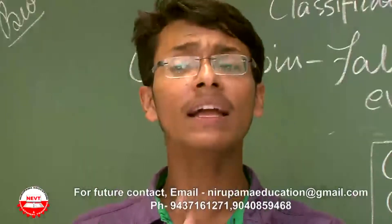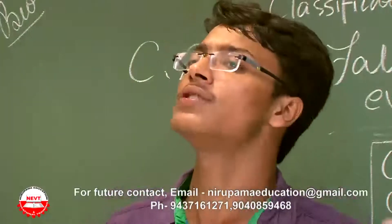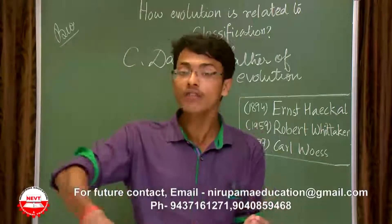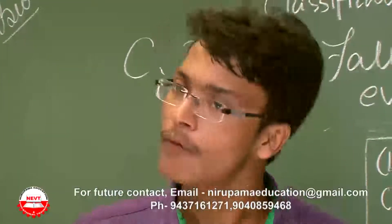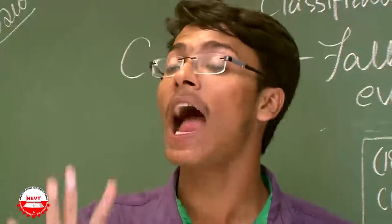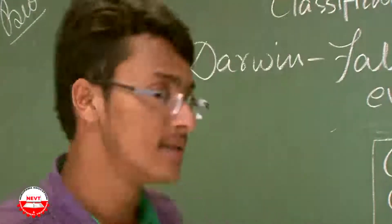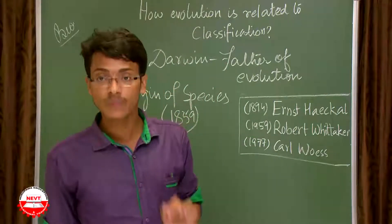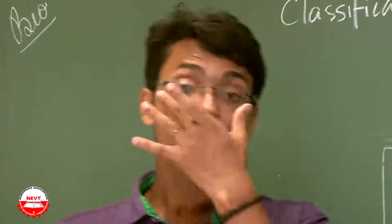Feeding is one of the most important characteristics that defines the type of morphological features an organism will exhibit. How evolutionary structures are related to classification is the most important part to understand. Darwin wrote a book called 'Origin of Species' in the year 1859, where he compiled all his observations in a tabulated form.